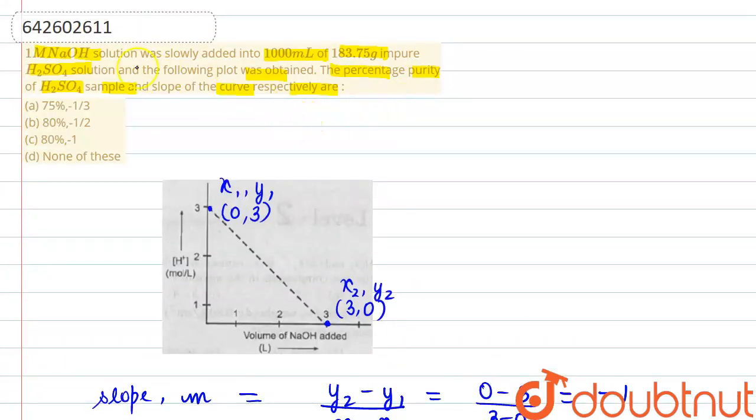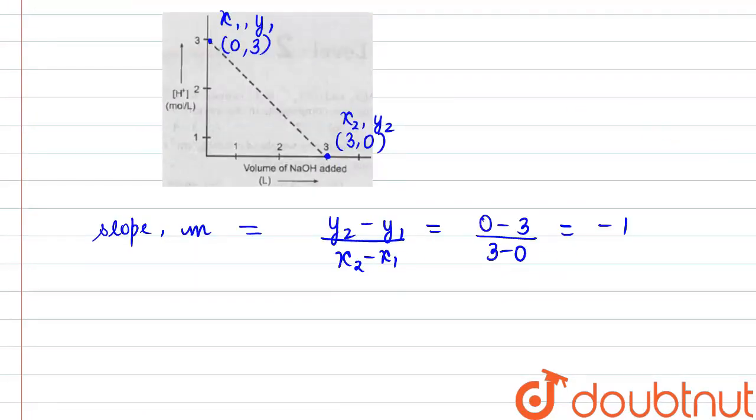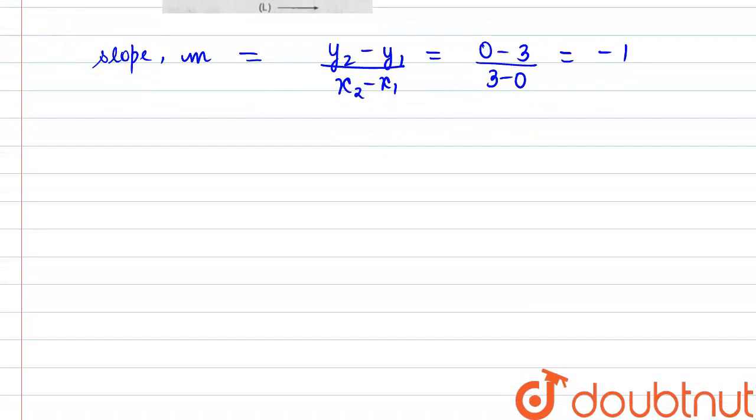The next point is to find the percentage purity. For that we need to first write the chemical reaction between sodium hydroxide and sulfuric acid. So what is happening? Sodium hydroxide here is reacting with sulfuric acid. It's a basic neutralization reaction...